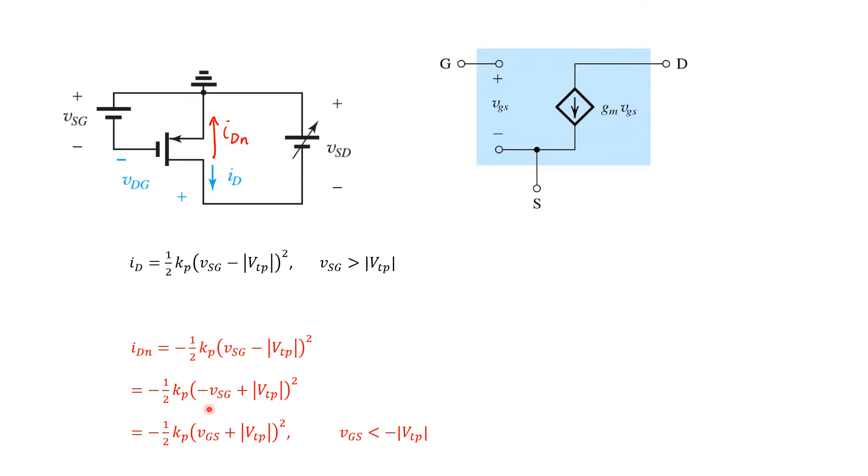We can make a further manipulation here. If we negate everything in the quadratic term here, that should have no effect because taking the square simply makes that negation irrelevant. And one final change here is that instead of writing this expression in terms of VSG, we can write it in terms of VGS. Clearly, VSG equals negative VGS. So we make that substitution in here, and we're left with the final expression at the bottom.